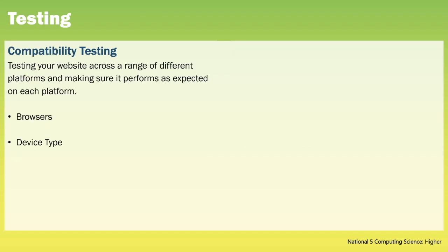A website should be tested on as many devices as possible. This means testing the website on different browsers, for example Chrome, Microsoft Edge and Safari, and a range of different devices such as laptop, tablet and smartphone. Compatibility testing can expose the following problems: depending on the browser or the device there may be changes in font size, alignment issues, scrolling issues or elements overlapping each other.